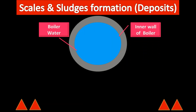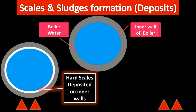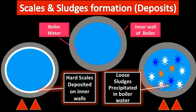Here is a better explanation of scales and sludges formation. This shows a cross-section of a boiler — the inner wall and the boiler water. We are continuously heating the boiler, and as a result the salts present get concentrated and deposited as hard scales on the inner walls. Sometimes, instead of hard scales, they can be deposited as loose sludges suspended in the boiler water. Scales are hard coatings on the inner walls, whereas sludges are loose precipitates suspended in the boiler water.